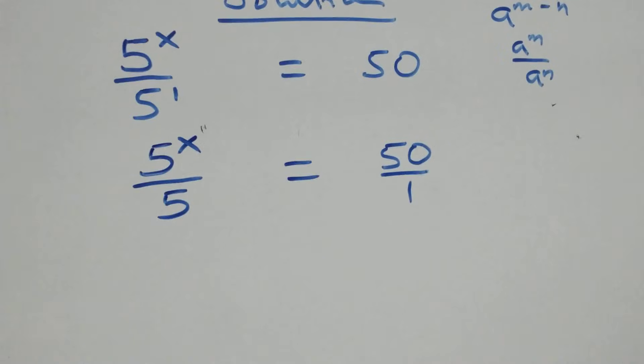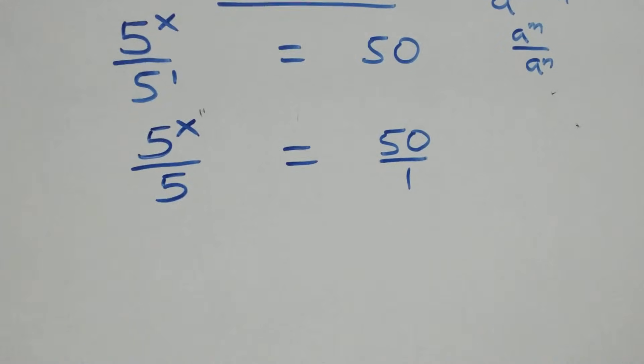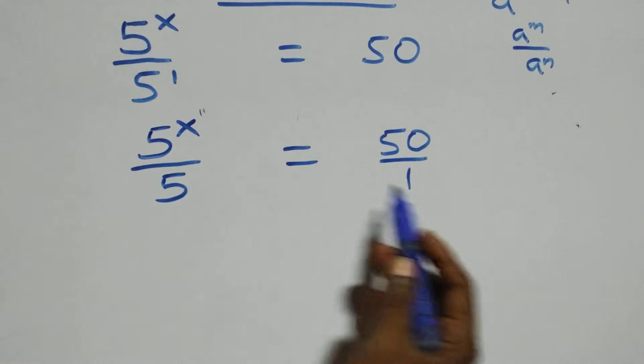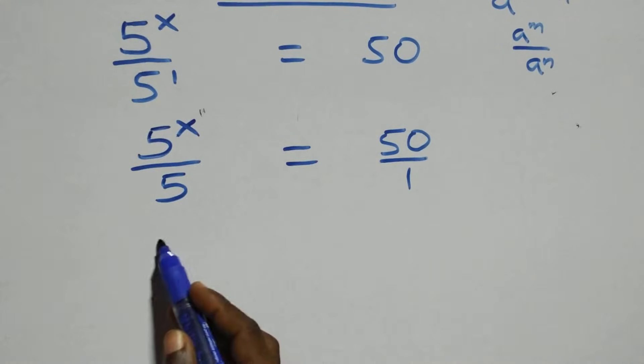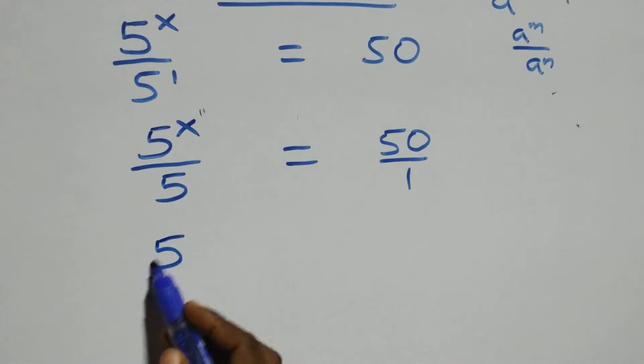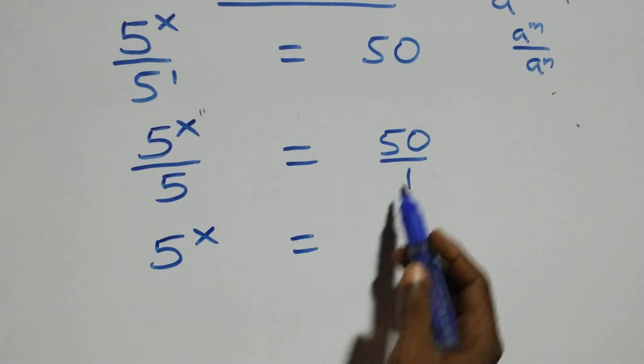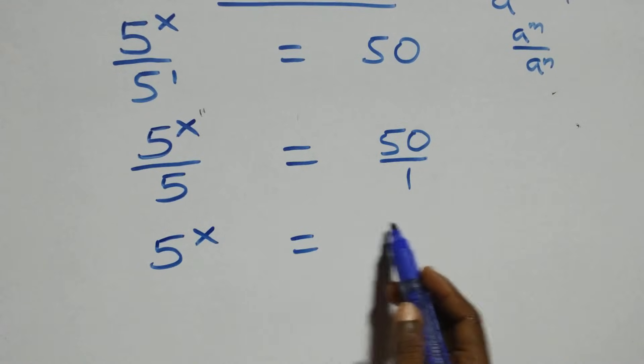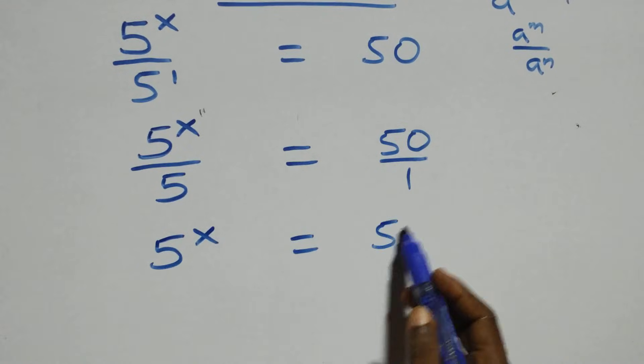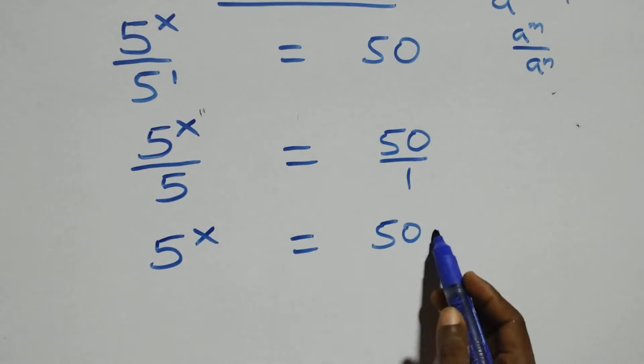The next step is to cross multiply. So 5 raised to power x times 1 — same as 5 raised to power x — equals 50 times 5.